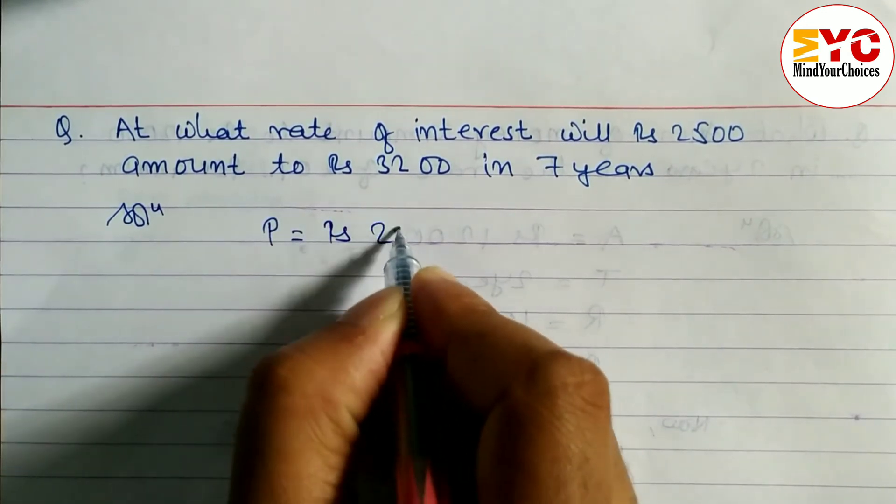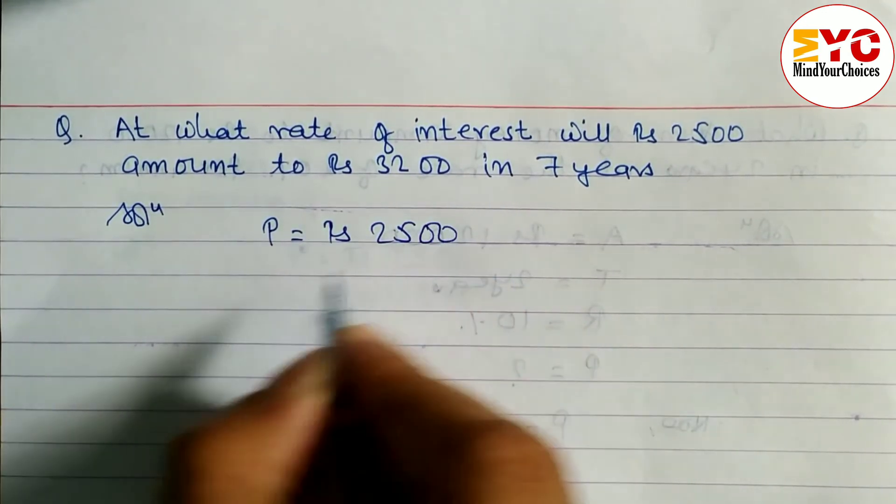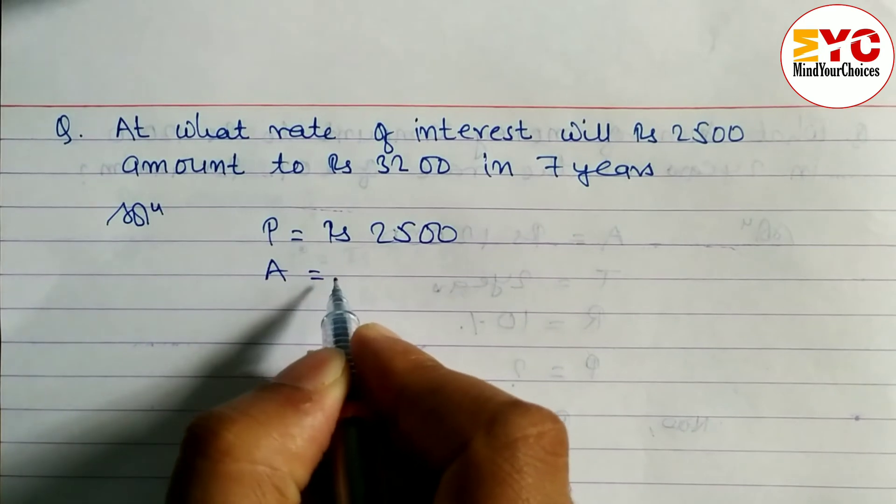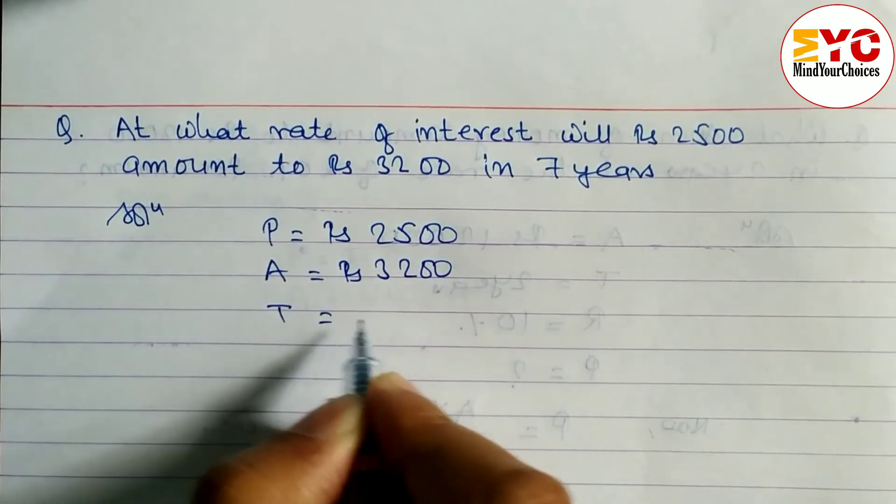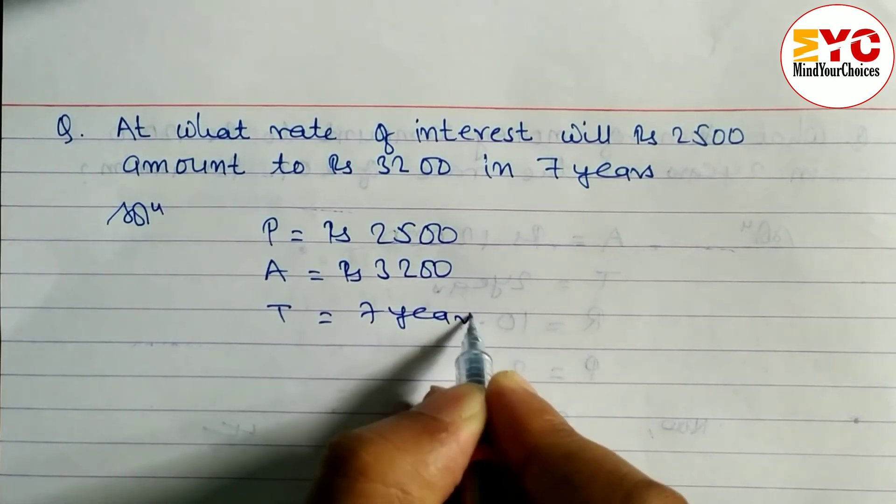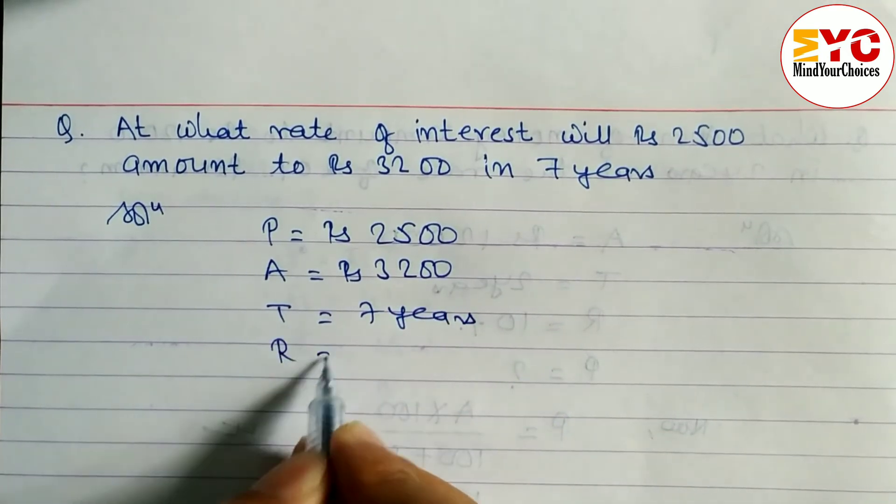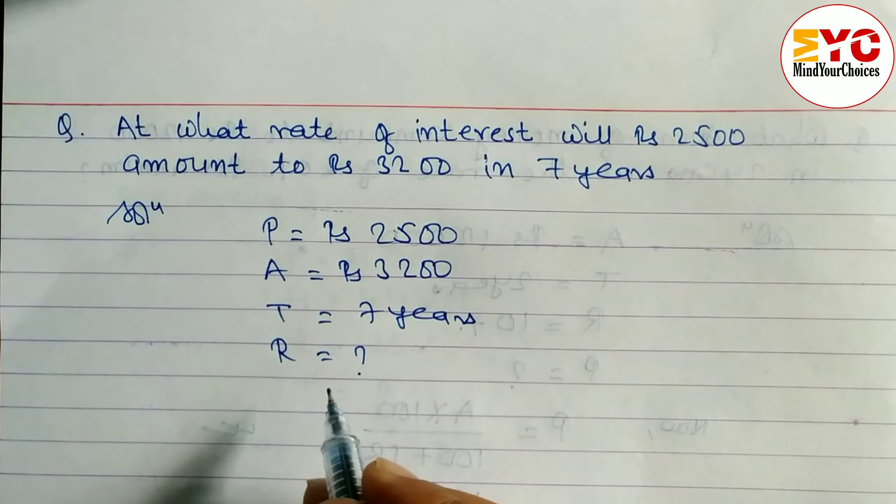Let's start here. Principle is equal to rupees 2500, amount is given here rupees 3200, time is given here 7 years. We have to find out rate of interest, R is equal to what, and rate formula is there.